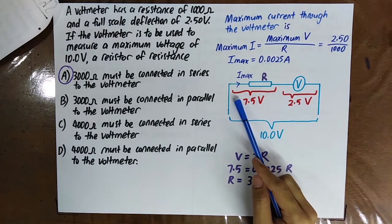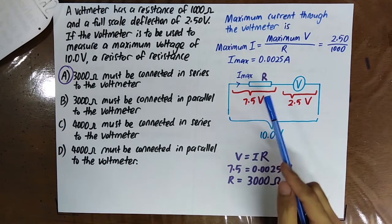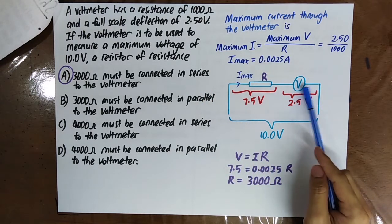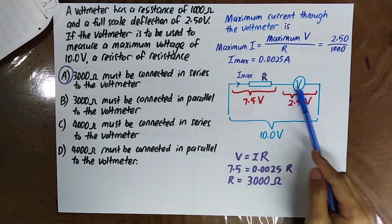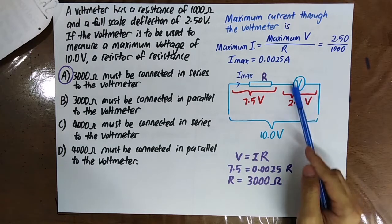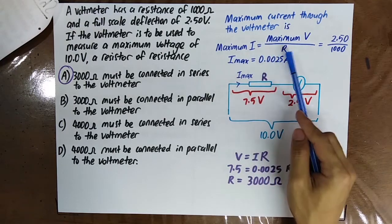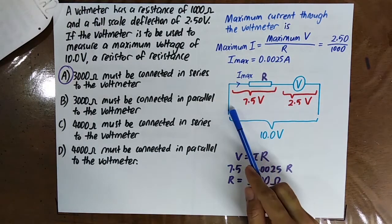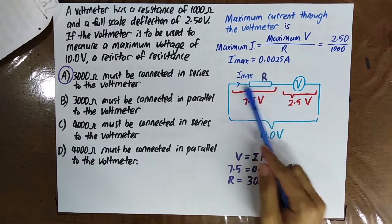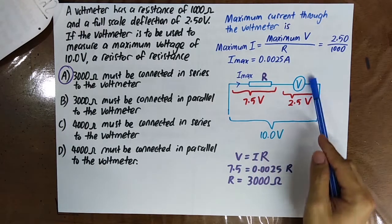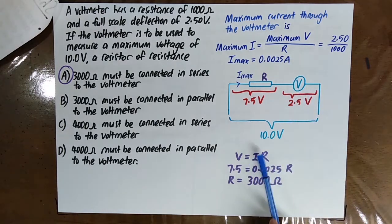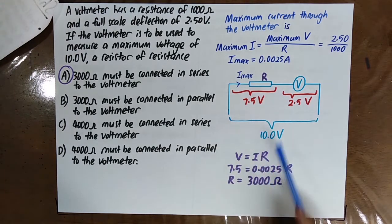10 minus 2.5 equals 7.5 volt. Now you are given the resistance of the voltmeter, and you also know the maximum potential difference across the voltmeter. Therefore, you can find the maximum current — the maximum current is this value. Since they are connected in series, the current through the resistor is the same as the current through the voltmeter. By using V equals IR, you can find the resistance of the resistor.